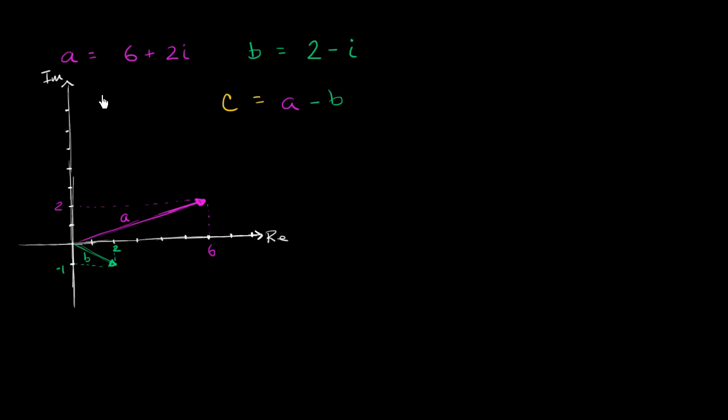So let's just first think about this. C is equal to A, which is the same thing as six plus two i, minus B. And what is B? B is two minus i.